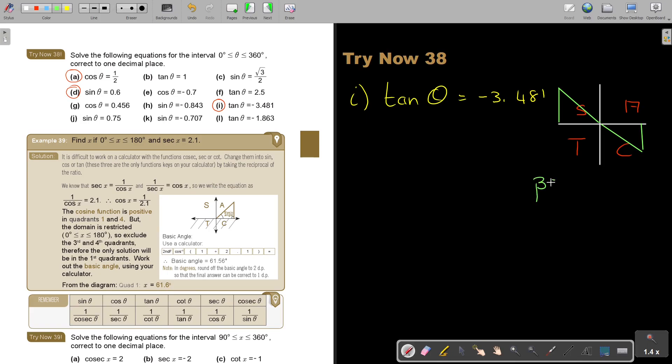Let's get that basic angle. What is my basic angle? Again, shift, tan, don't press that negative in. I repeat: shift, tan, 3.481. I did not press the negative in. The negative just tells you in what quadrants. Otherwise, you will only get one answer. Then I get 73.97 degrees.